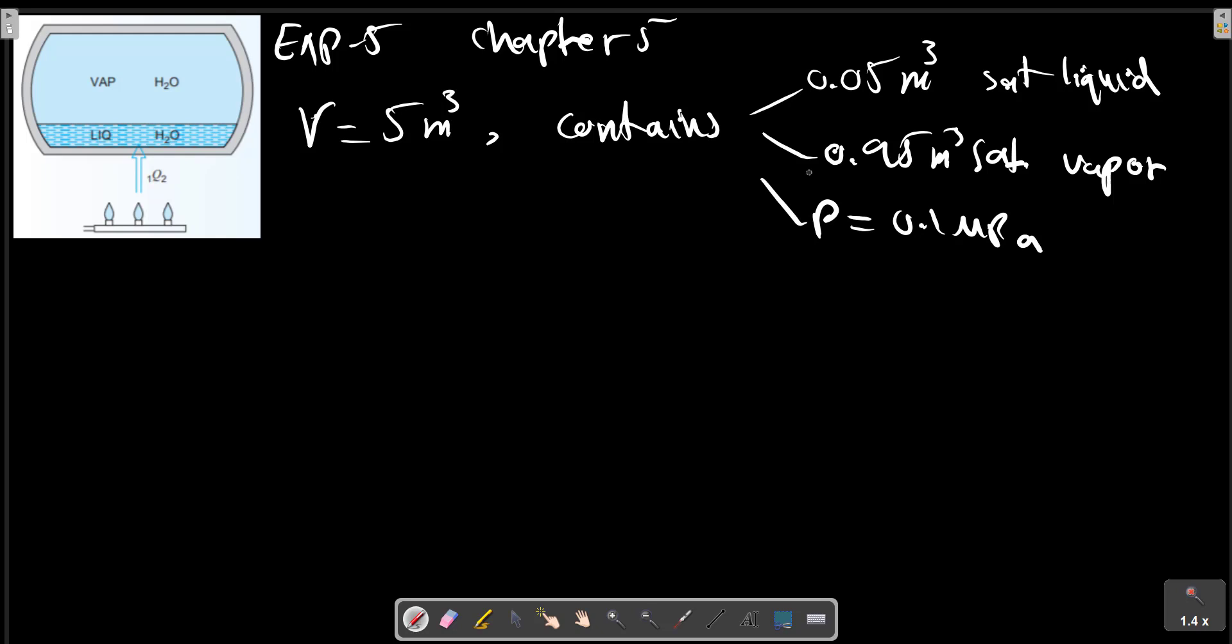Heat is transferred until the vessel is filled with saturated vapor as shown in this picture. So heat is transferred from this condition, state 1, until we reach saturated vapor. For the saturated vapor at constant volume.